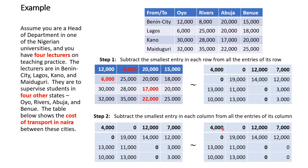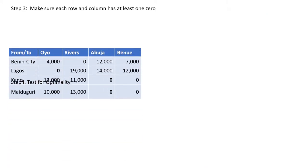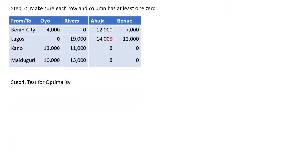Now check that each row and column has at least one zero. Row by row there is a zero in each row, and column by column there is a zero in each column. Each row and column has a zero, so the third step is assured.